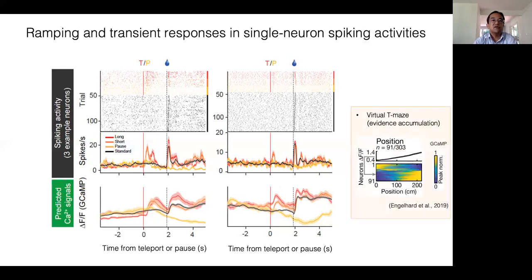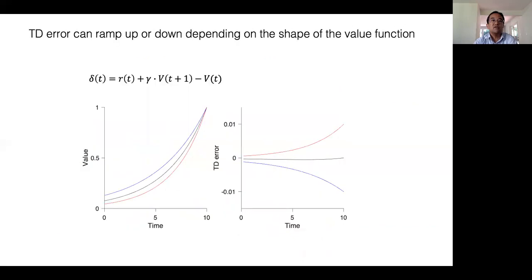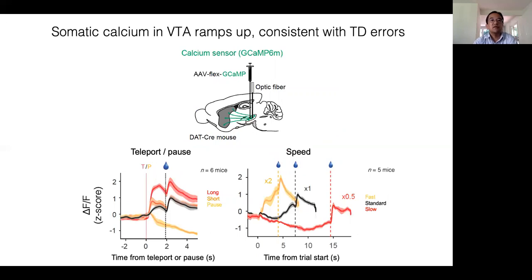It is interesting to note that these positive and negative ramps have been observed at the single neuron level in the previous imaging study from the Witten lab. As I mentioned earlier, a positive ramp can result from a more convex value function. And similarly, a less convex value function can result in a TD error that ramps down. The derivative-like computation can provide a unifying account of this type of diversity observed in single neuron activities. These experiments show that the spiking activity ramps up and potentially explains ramping signals observed in axonal calcium signals. The reason for apparent discrepancy may be due to the difference in fast and slow measurements. If this was true, somatic calcium signals should also exhibit ramping signals. Indeed, calcium signals measured at the soma of dopamine neurons showed ramping signals consistent with TD errors.